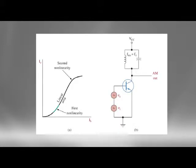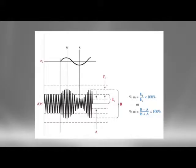If we take this and mix it in a nonlinear device with the low frequency audio signal, we can show mathematically that the new wave is equal to the peak amplitude of the carrier plus the instantaneous amplitude of the information signal. As you can see on the graph, the information signal is now superimposed on the carrier, and the varying amplitude of the carrier resembles the information signal.